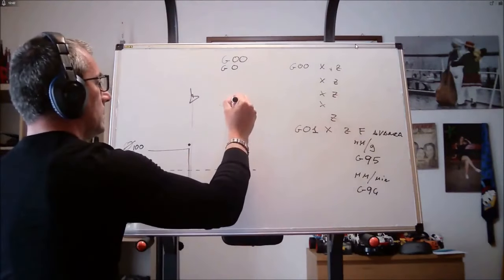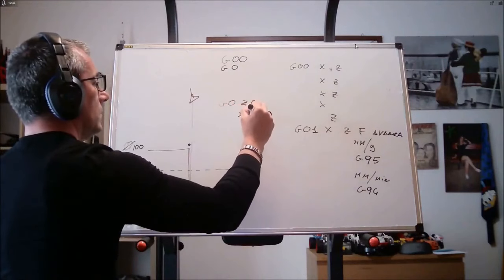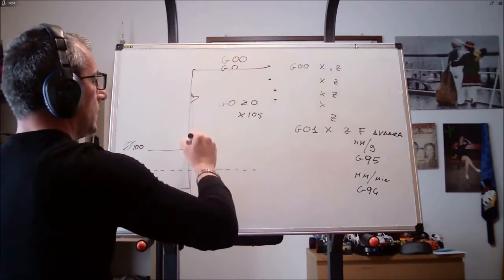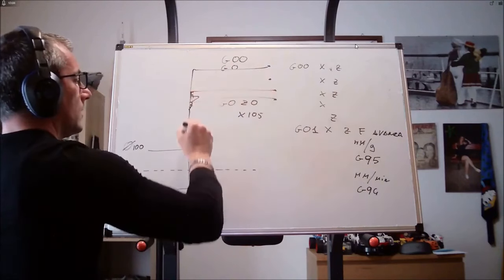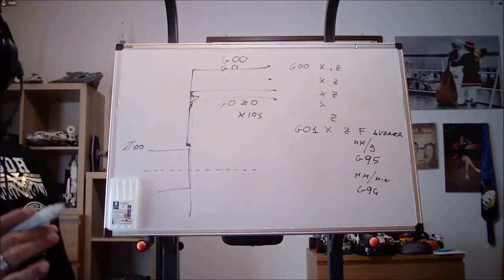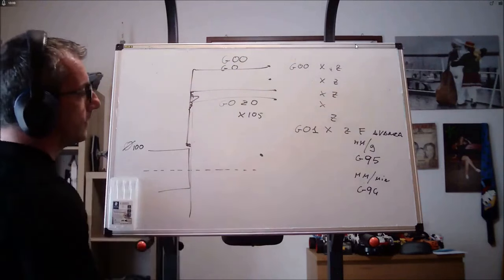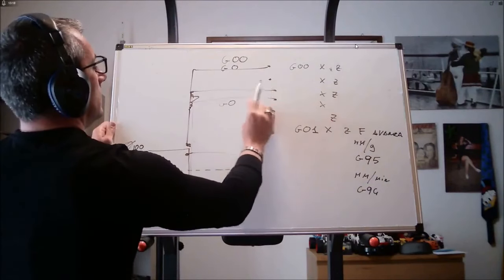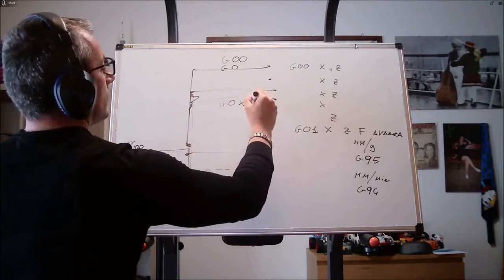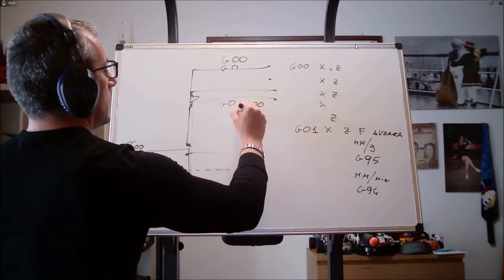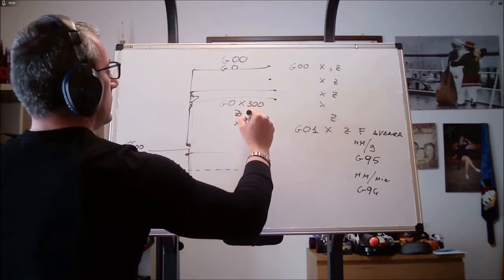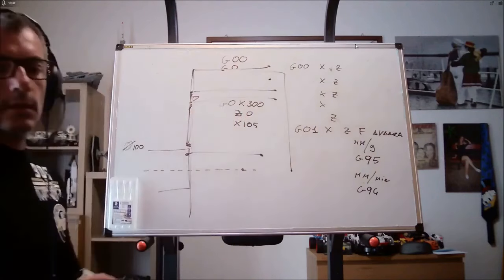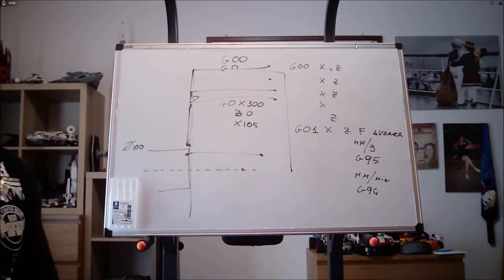This is why I always recommend always performing rapid approaches safely for safety in two blocks. So a rapid approach that will have done G0, Z0, then G0, X105. From 105, what will the machine do from here? Wherever it is, it will do this. First it will go to Z zero, then it will go to X105. You want to be absolutely sure that your colleague hasn't left the machine here. So Z zero collision, G0 X300 Z0, then X105. Your colleague left the machine here. The machine will do this. Safety guaranteed 100%. Okay.